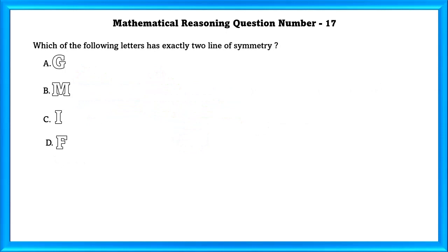Question No. 17: Which of the following letters has exactly two lines of symmetry? In the letter I, it has a horizontal symmetry and vertical symmetry. So this gives two lines of symmetry. Our answer is C.